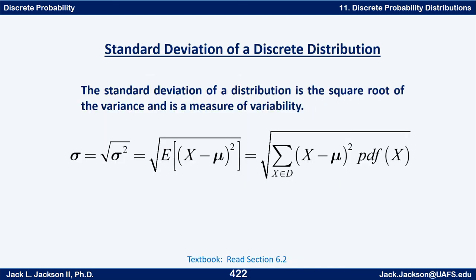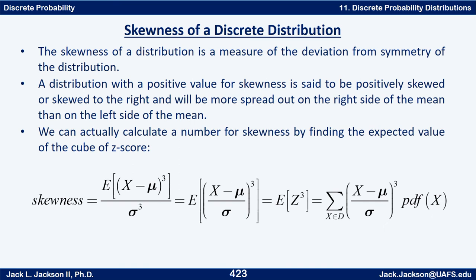Now we can also talk about—I'm going to throw in skewness in this video as well. The skewness of a distribution is a measure of the deviation from symmetry of the distribution. Remember, if the skewness is zero, the distribution is perfectly symmetric. It's got positive skewness or skewed to the right when you have basically a longer tail or more spread out on the right side. And similarly, a negative skewness or skewed to the left—it's going to be more spread out on the left. But you can actually compute a number for skewness.